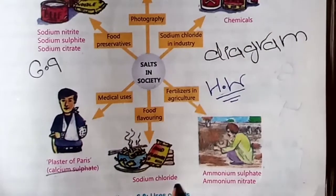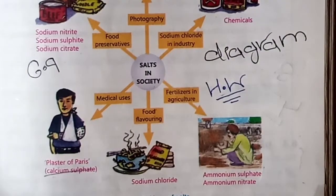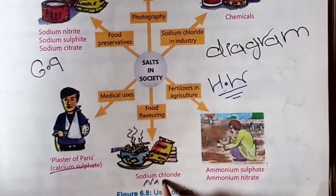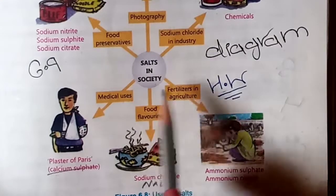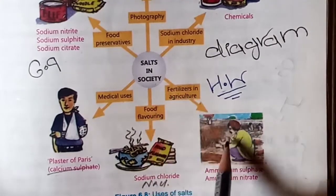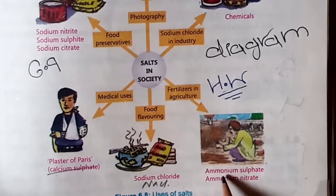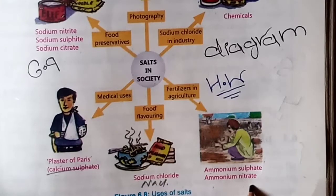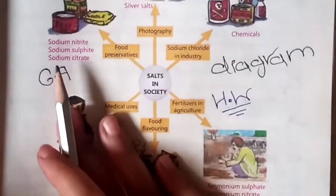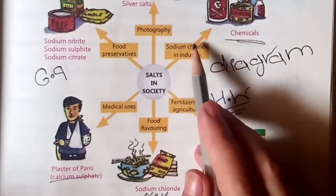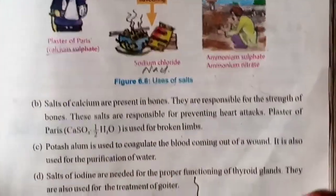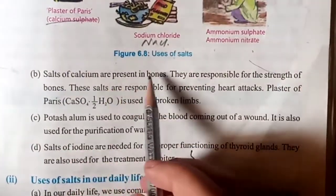Plaster of Paris — calcium sulfate — is used in medical uses. For food flavoring, we use sodium chloride. Just as you add flavor to food, you use table salt, which we call NaCl. In agriculture, fertilizers used include ammonium sulfate, ammonium nitrate, sodium chloride, and sodium chlorate.